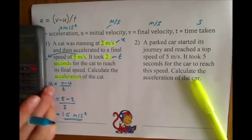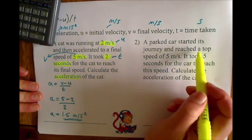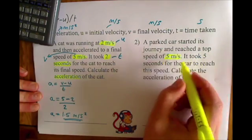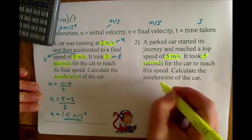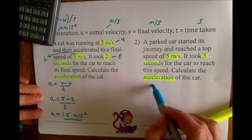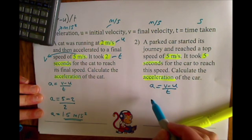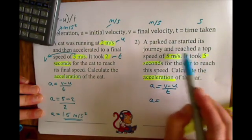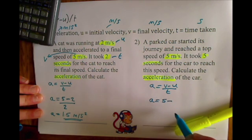We'll do exactly the same thing with another example. A parked car started its journey and reached a top speed of 5 meters per second. It took 5 seconds for the car to reach this speed. Calculate the acceleration of the car. So again I write down my equation: a equals v minus u divided by t. Do I have my final velocity? Well it said it reached a top speed of 5 meters per second — that's v. Now I need u, my initial velocity.